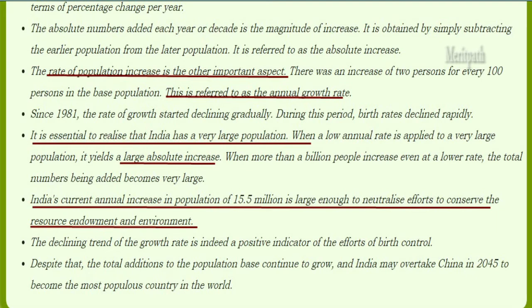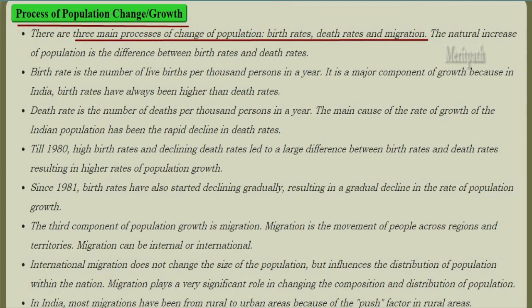The declining trend of growth rate is a positive indicator of the effort of birth control. Despite that, total additions to the population base continue to grow, and India may overtake China by 2045 to become the most populous country in the world. There are three main processes of population change: birth rate, death rate, and migration. The natural increase of population is the difference between the birth rate and death rate.